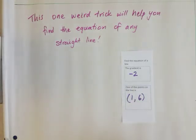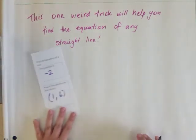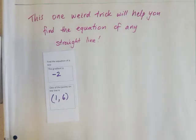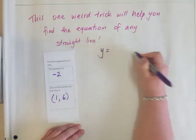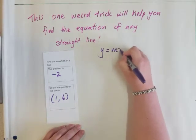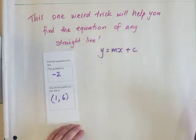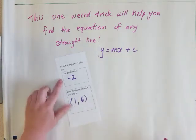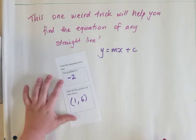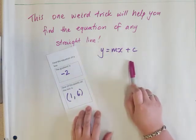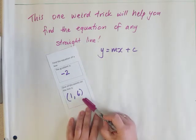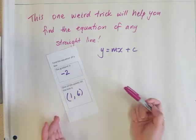Now we're going to find the equation. First thing you do is write down that a straight line equation is y = mx + c. Now looking at our information, we're going to work out which letters in this equation am I going to substitute in with the numbers (1, 6) and -2.